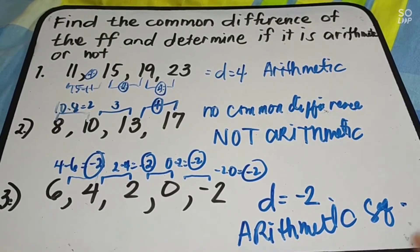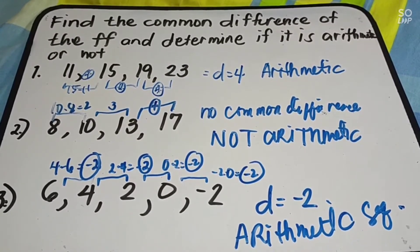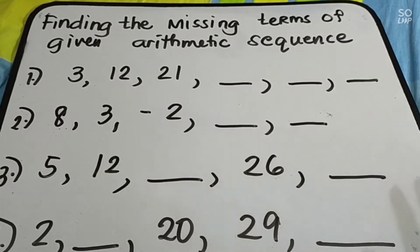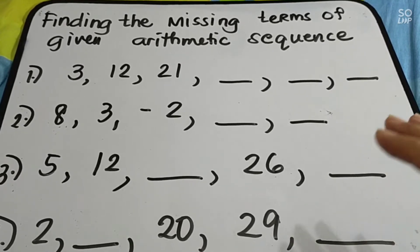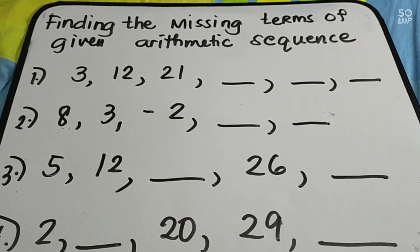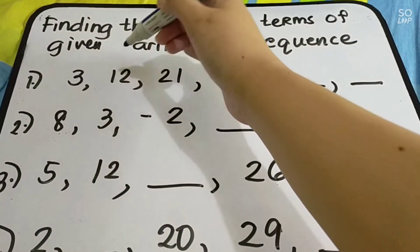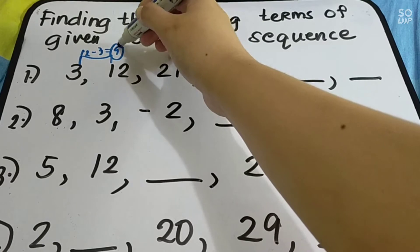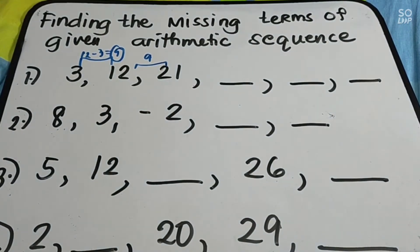That is how you determine if a given sequence is arithmetic or not, and how to find the common difference. Now let's move on to finding the missing terms of the given arithmetic sequence. All these sequences are arithmetic, so they have a common difference. To find the missing terms, you just need to get the common difference. For example, number 1: we have 3, 12, and 21. Let us determine the common difference — 12 minus 3 = 9; 21 minus 12 = 9. So the common difference is 9.